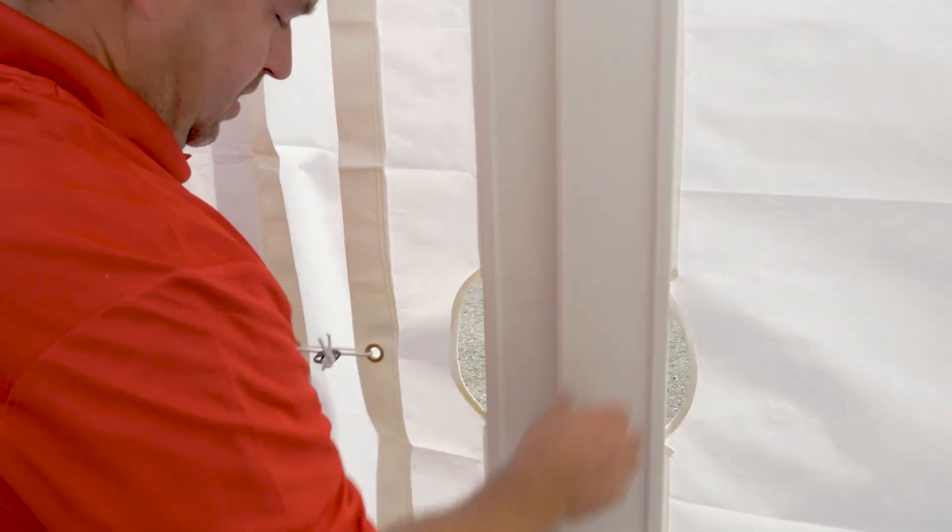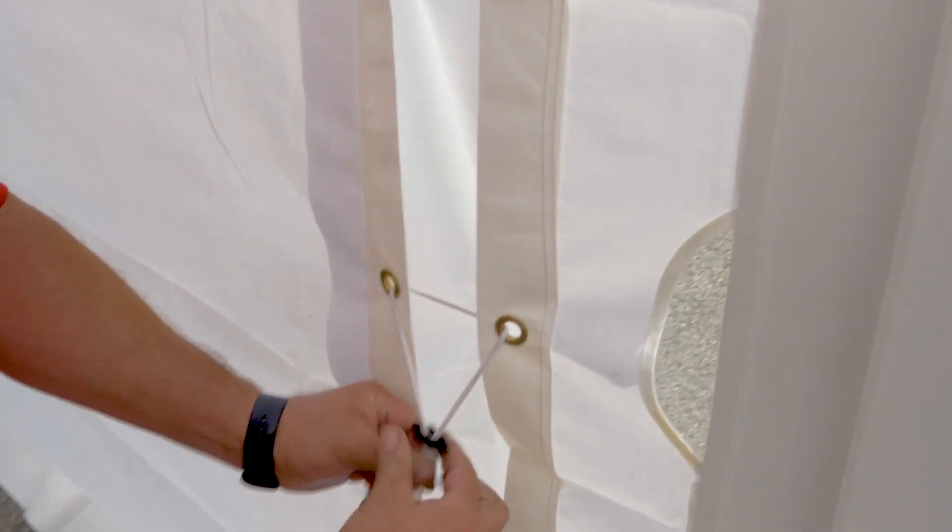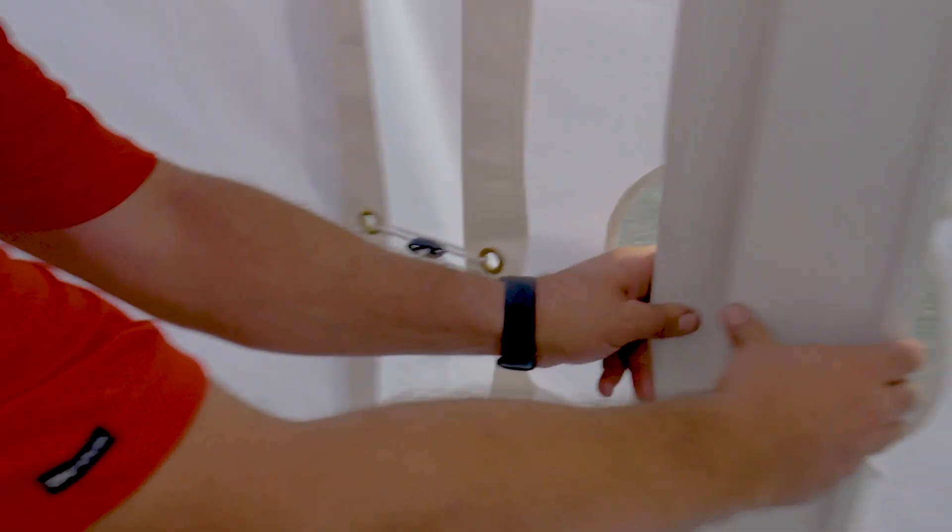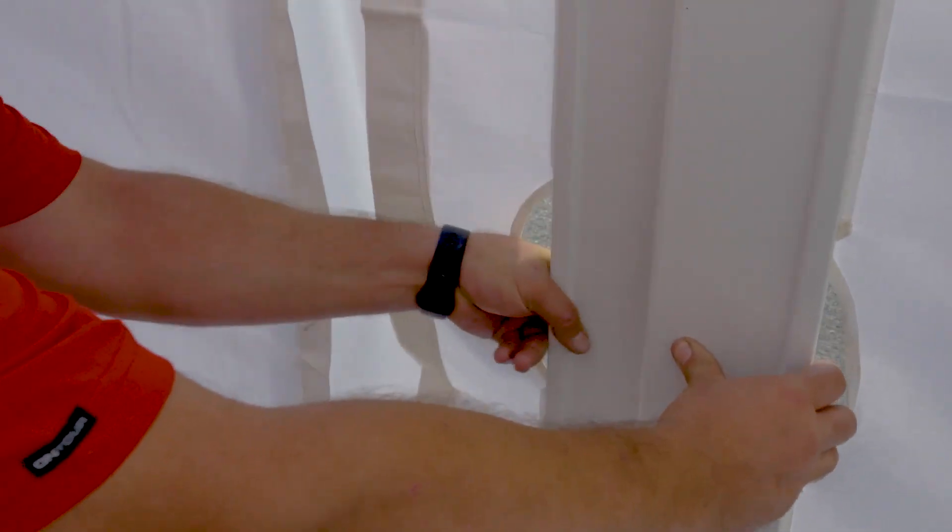To close the doors, simply interlock the two shutters together. Adjust the door's tautness by tightening the bungee cords accordingly.